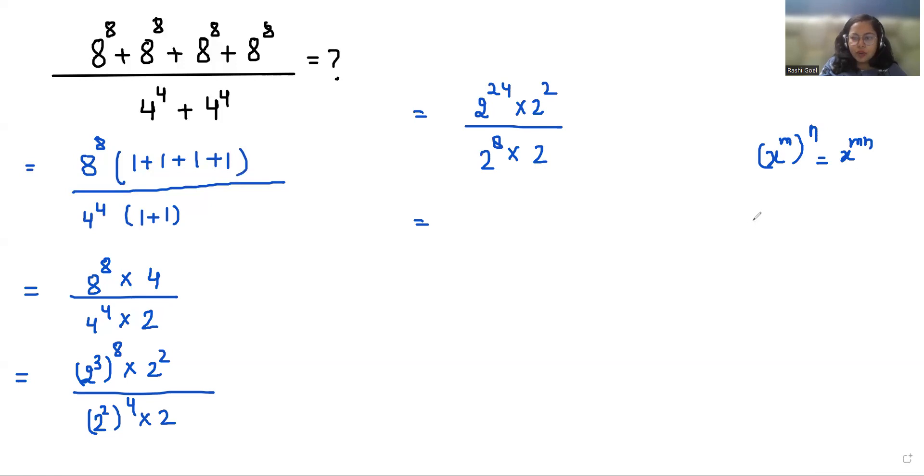Now exponent rule x power m times x power n, we can write this as x power m plus n. So 2 power 24 plus 2 by 2 power 8 plus 1. So 2 power 26 by 2 power 9.